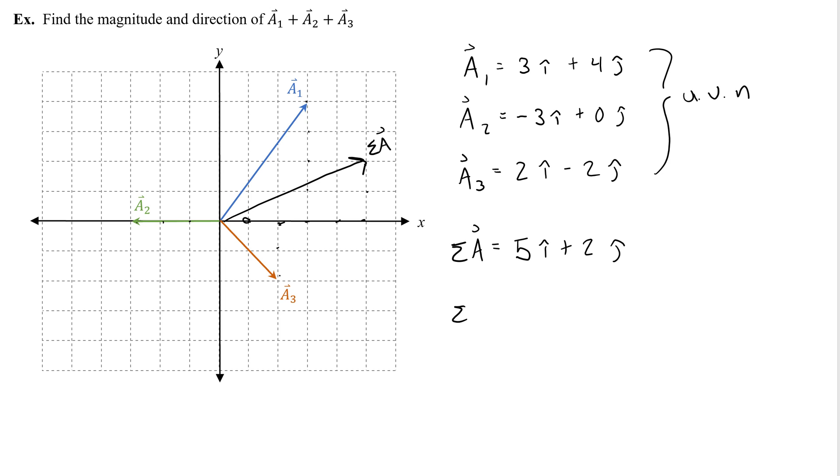Finding the magnitude, which would be the length of that line, it's very easy. Do the square root of 5 squared plus 2 squared. The square root of 5 squared plus 2 squared is 5.38, so we'll say 5.4.